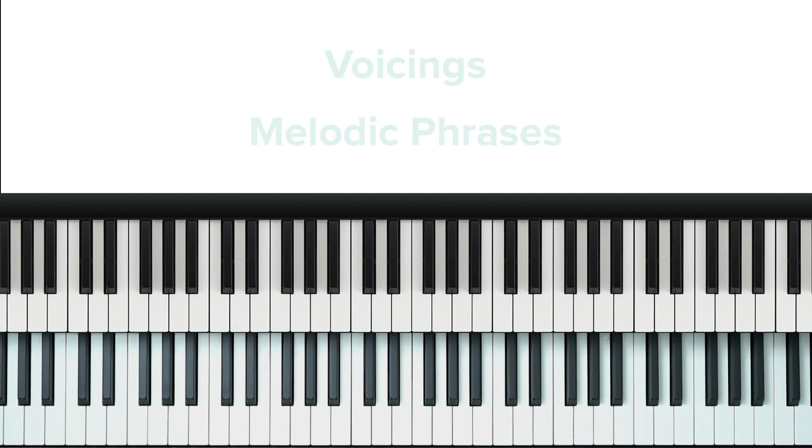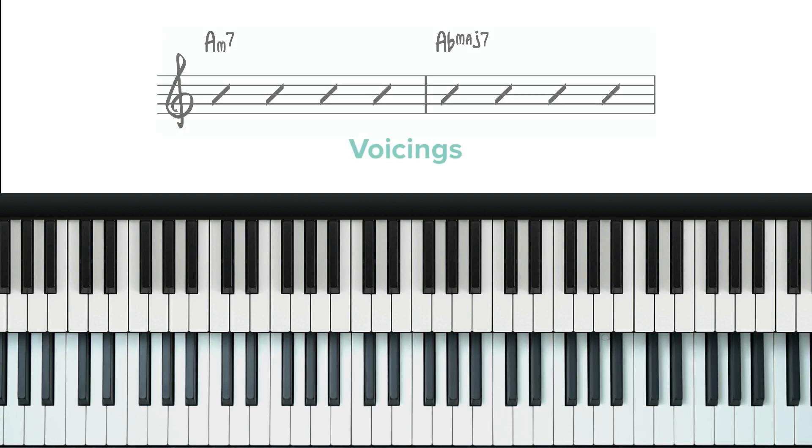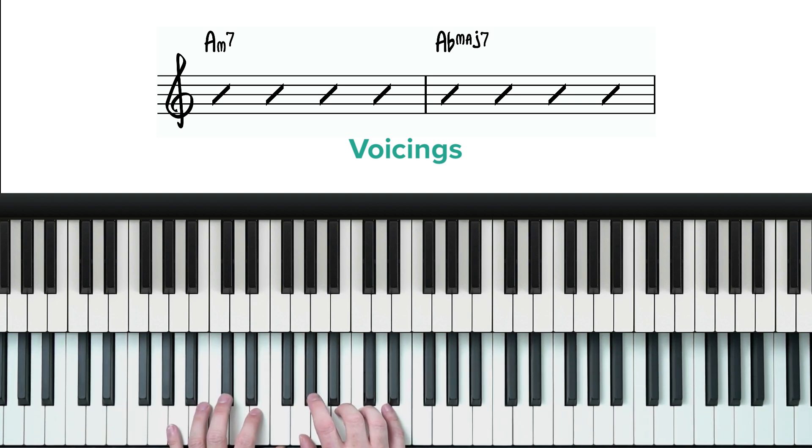We'll start with voicings. Because these two chords are completely unrelated to each other harmonically speaking we have to choose our voicings carefully but this is also what gives it that neo-soul sound. So when choosing voicings you need to make sure they have good voice leading. Here are some examples of voicings you could use.